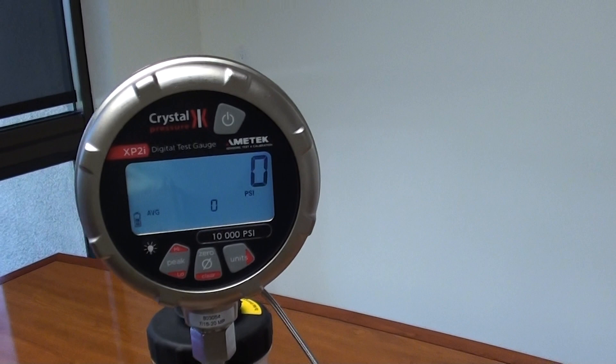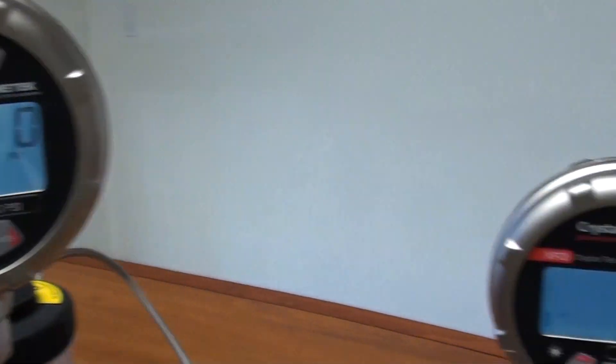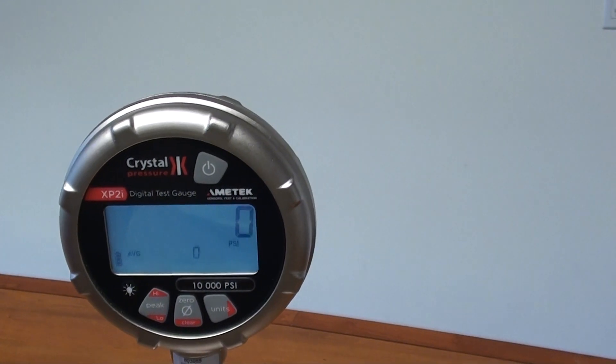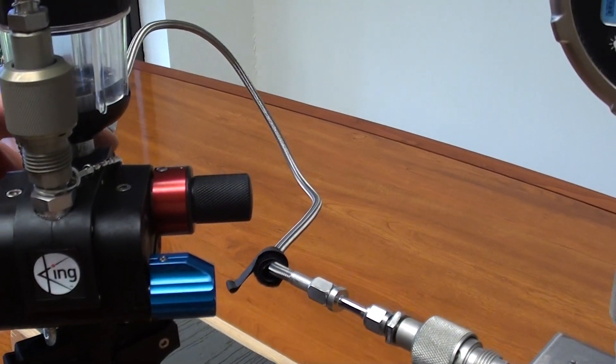First we're going to check that our gauges are properly zeroed. This is our reference gauge. This is our device under test. First thing to prepare the hand pump is we're going to close the venting valve.